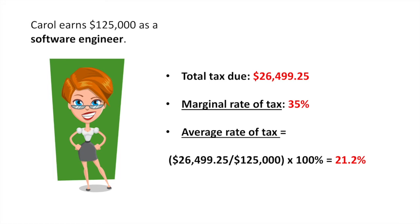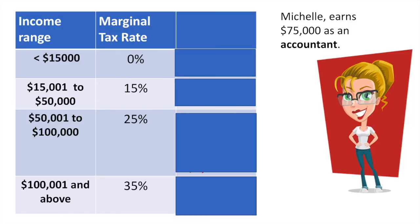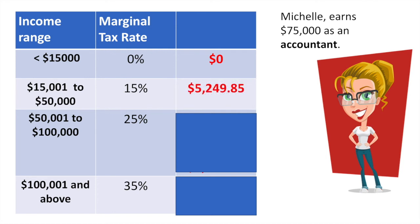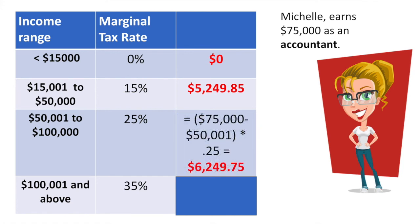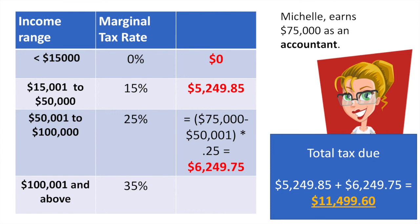If you're feeling more confident now, try to calculate it for Michelle. Michelle pays 0% in tax for the first bracket and pays the full amount of tax in the second bracket: $5,249.85. She ends up in the 25% marginal tax bracket and pays $6,249.75 in taxes for that level. As her income never exceeds $100,000, she is not paying anything further in taxes. Her total tax due is $11,499.60.